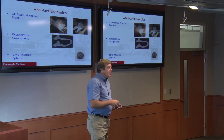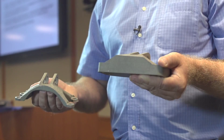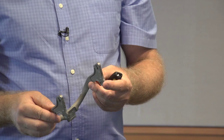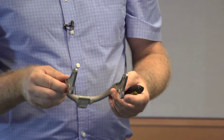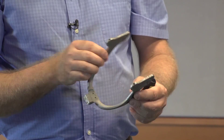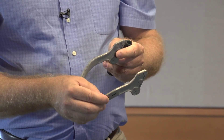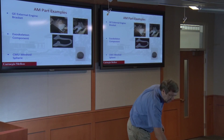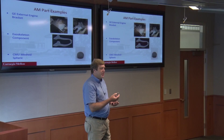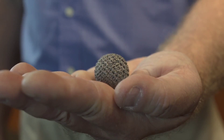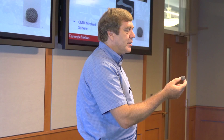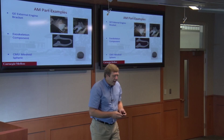The second part is an exoskeleton component related to a project by Steve Collins in our mechanical engineering department. He makes exoskeletons for rehabilitation applications. It's designed to be very lightweight — still made of titanium, but all the arms are just thin hollow walls. The last part is the CMU mesh sphere, made for our undergraduate class. You can very easily embed cellular meshes into components by direct metal additive manufacturing, and you can do this just as easily as building a solid part. You may see more parts that are meshed cellular structures rather than solid.